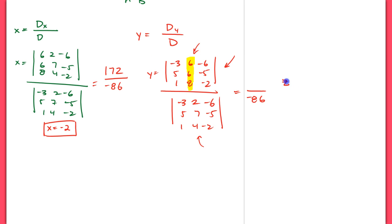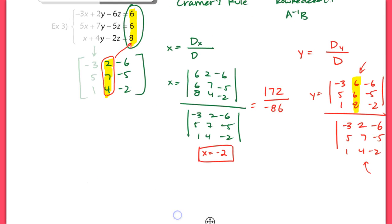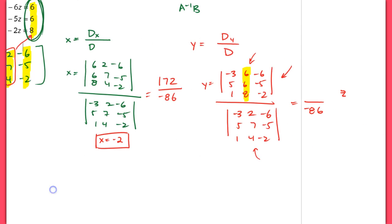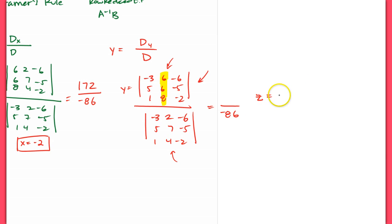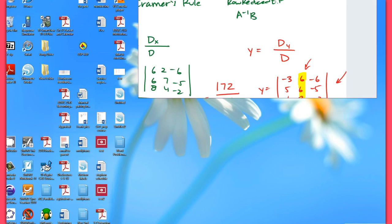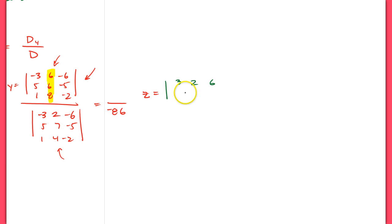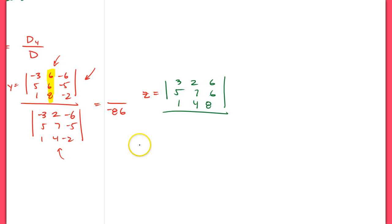For z, do the same thing — replace the third column with 6, 6, 8. So you have negative 3, 2, 6; 5, 7, 6; 1, 4, 8 divided by the original coefficient matrix. Put it in your calculator and you get your z variable. The coefficient matrix determinant doesn't change — it's only Dx, Dy, or Dz that you need to edit.